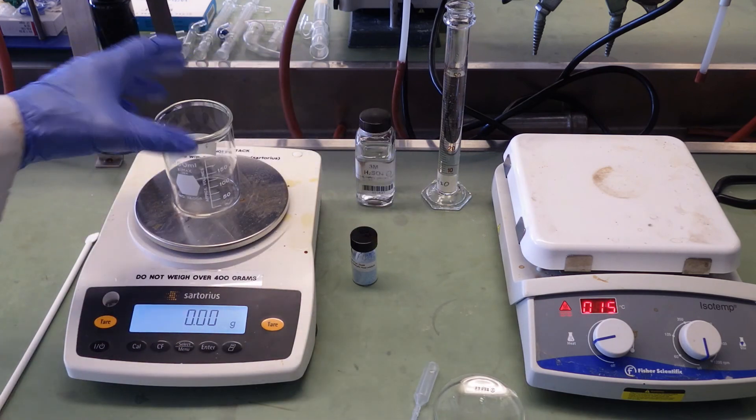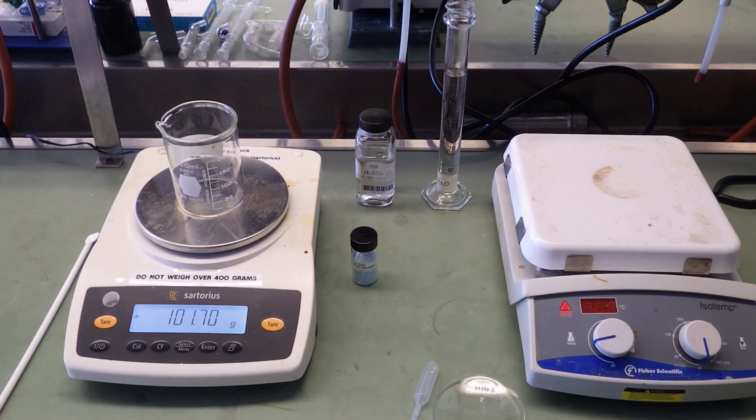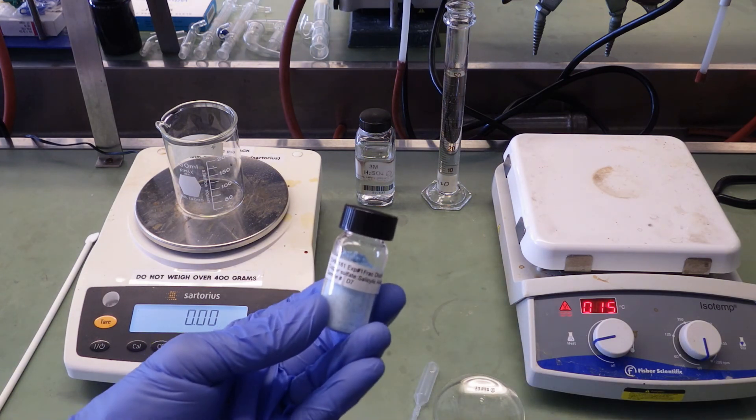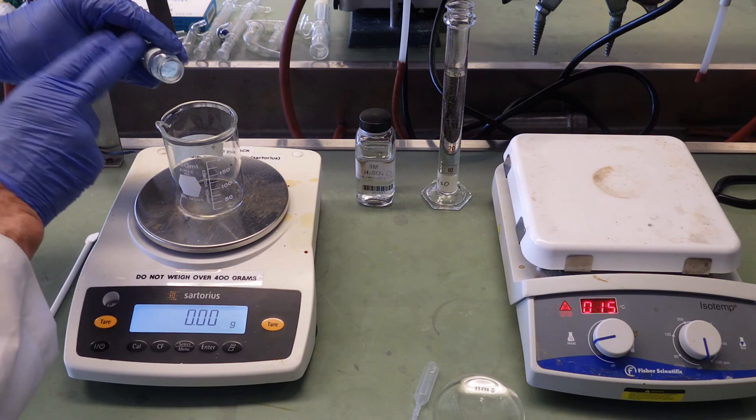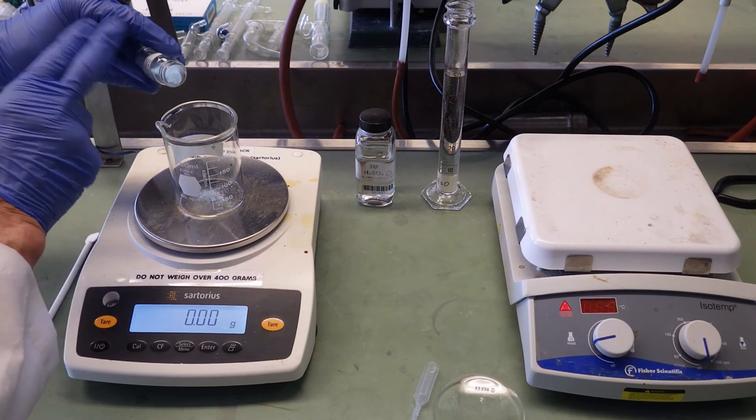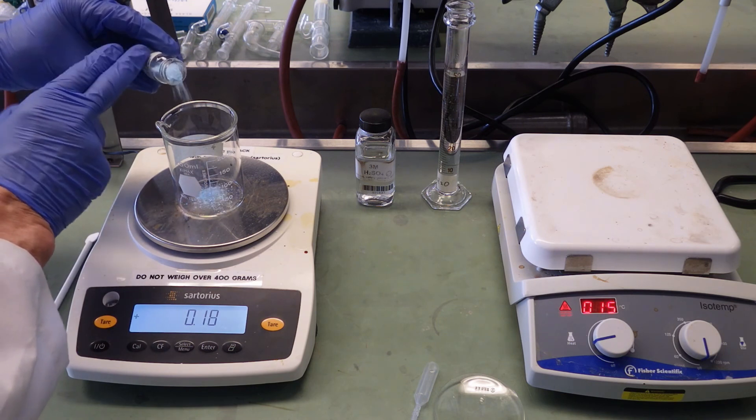We'll start by weighing about 2.5 grams of salicylic acid copper(II) sulfate pentahydrate mixture. Here's the mixture. Because it's a powder, we don't need a spatula to transfer it—we can get good control just by tapping as I'm doing here.